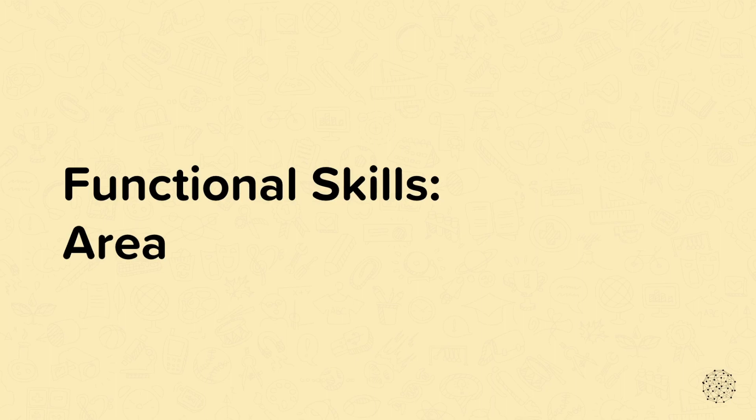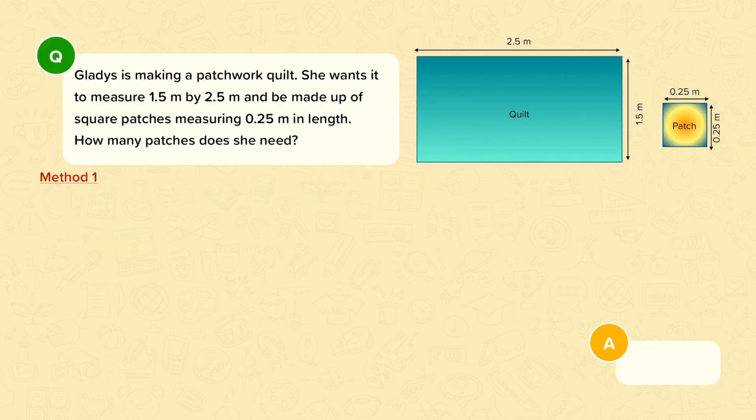Functional skills, area. In this video we're going to go through two examples of questions that use area in a functional context. So we'll start with this question. Gladys is making a patchwork quilt. She wants it to measure 1.5 meters by 2.5 meters and be made up of square patches measuring 0.25 meters in length. How many patches does she need?